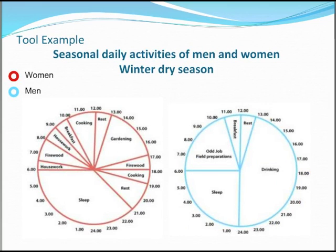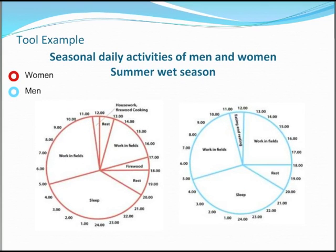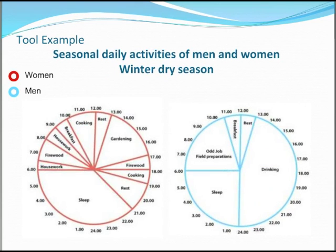This is an example of an output from one tool — a standard participatory rural appraisal tool looking at seasonal daily activities. On the left are women, on the right men, shown for the winter and summer seasons. In the summer season they look similar, but in the winter season women seem to be doing many different types of activities. A tool like this, examining differences between men and women across seasons, is critical for climate smart agriculture — it helps you understand who does what and when, and what times of year are critical for introducing new tools.